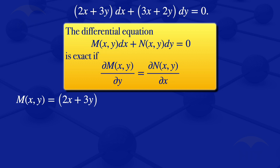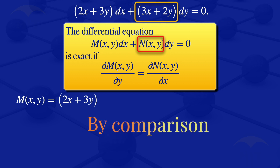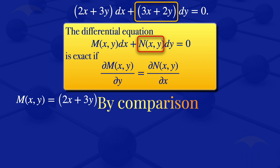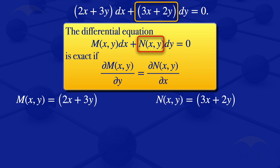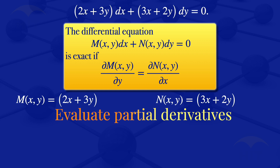Now looking at the coefficient of dy, in this equation here, the coefficient is N(x,y). And this equation gives 3x + 2y. So by comparison we see that our N is equal to 3x + 2y.